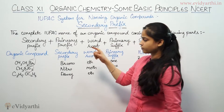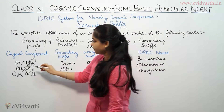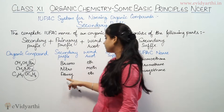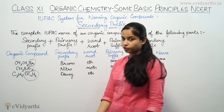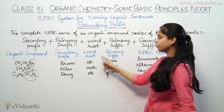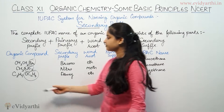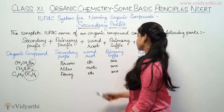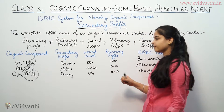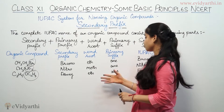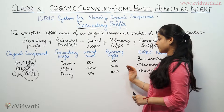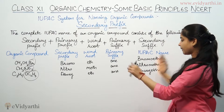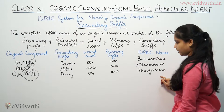Third example: C₂H₅OC₂H₅. The secondary prefix here is ethoxy, for the OC₂H₅ group, as I told you in the previous video. The word root is eth, for the two-carbon chain. The primary suffix is ane, as it has no double bond or triple bond — it is a saturated compound. So the IUPAC name is ethoxyethane.